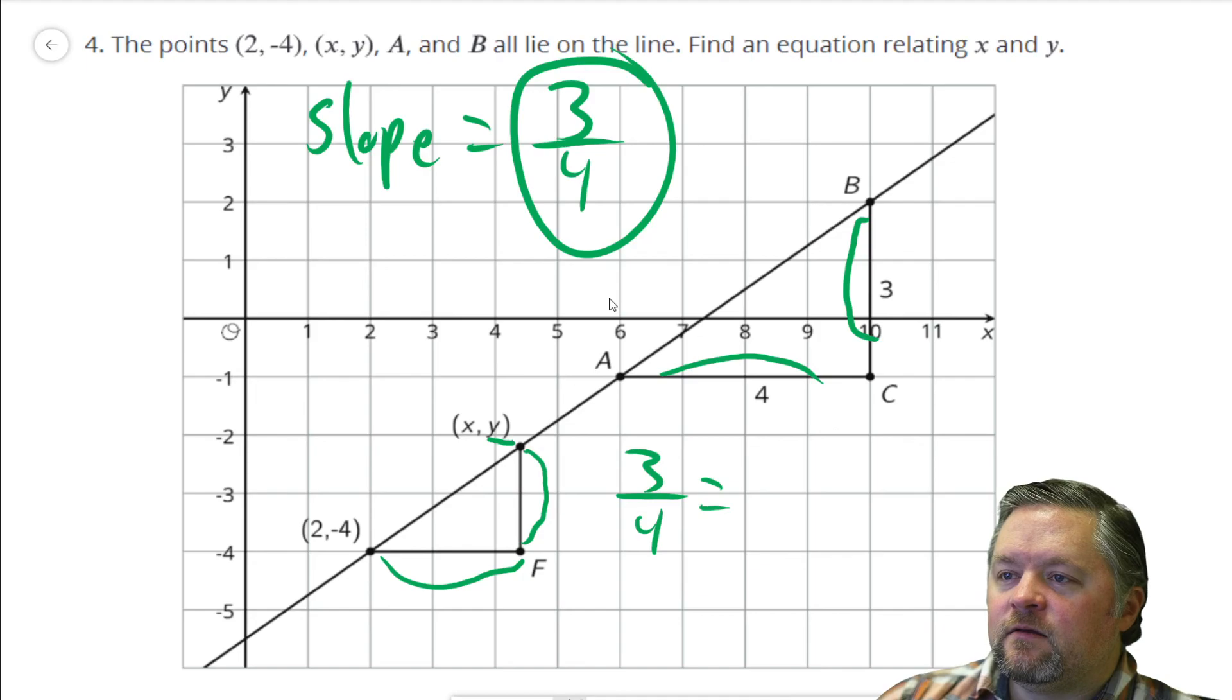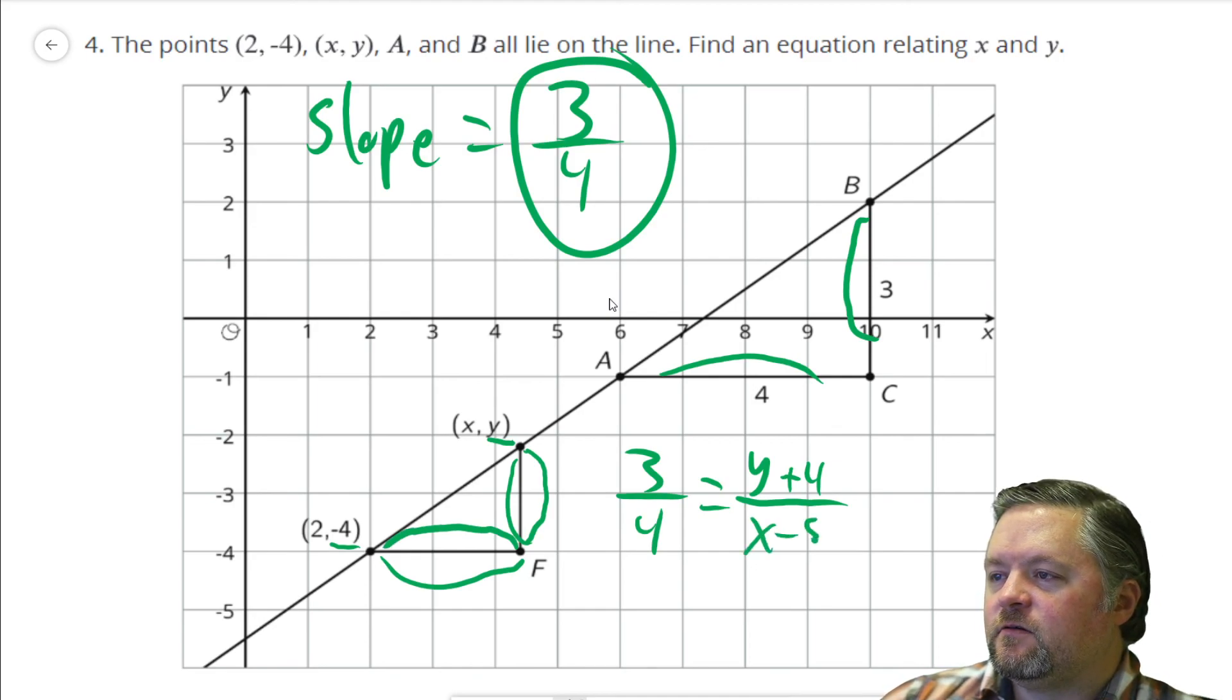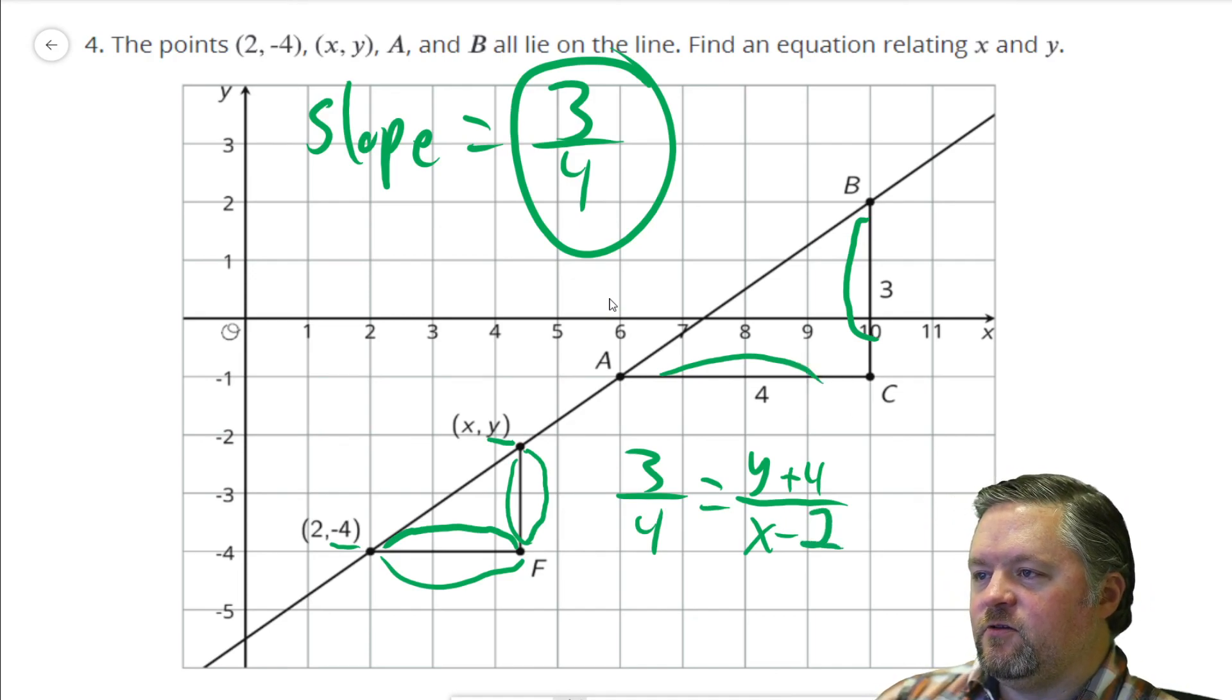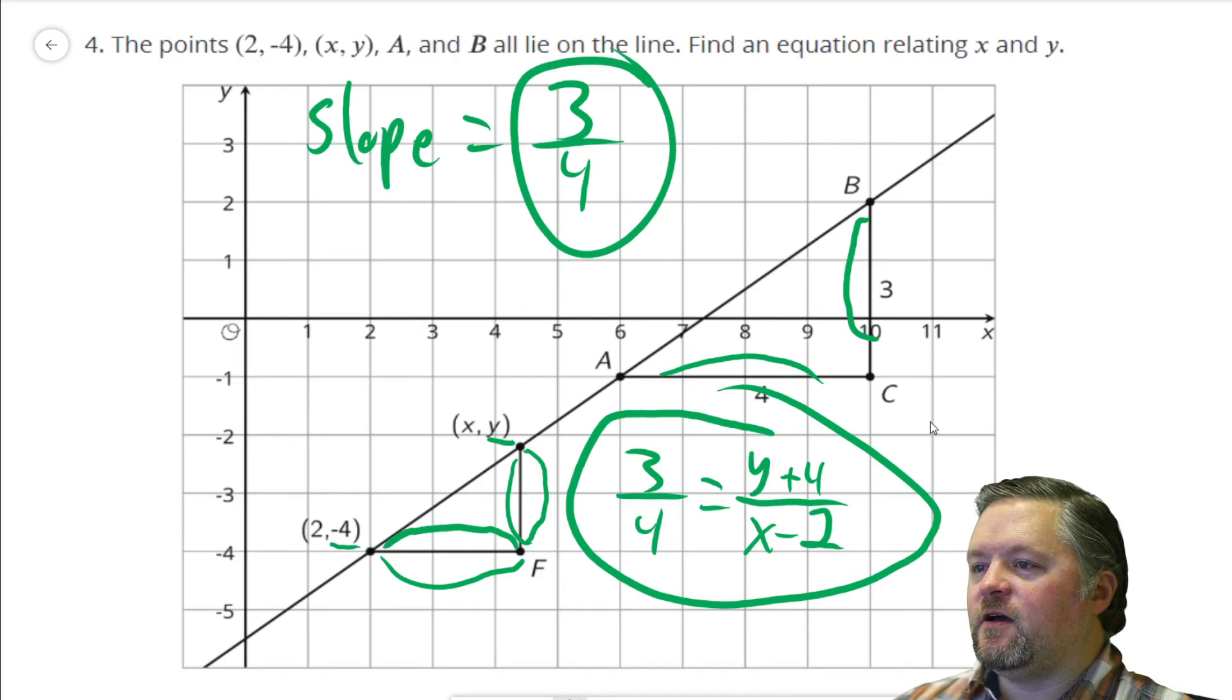y minus this y value gives us this height, y minus (-4), subtracting a negative is adding, y plus 4 over x subtract 2 to give us that value, x subtract... let me make a 2 that looks like a 2. 3/4 equals (y + 4)/(x - 2). Beautiful equation of a line.